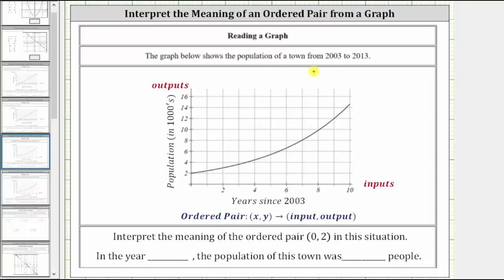The graph below shows the population of a town from 2003 to 2013. Interpret the meaning of the ordered pair (0, 2) in this situation.